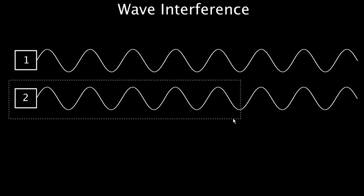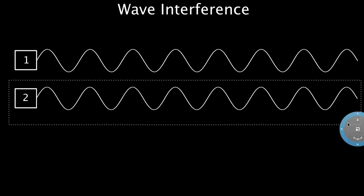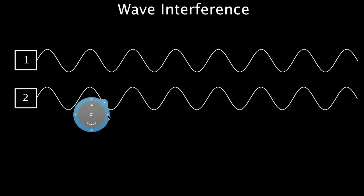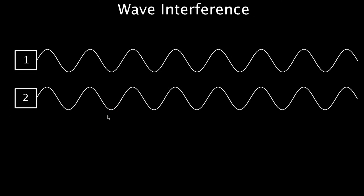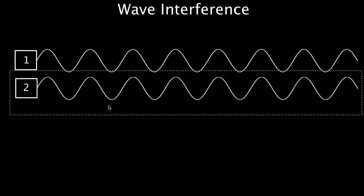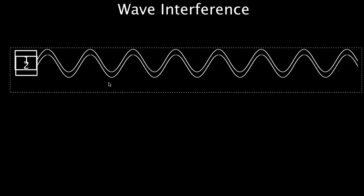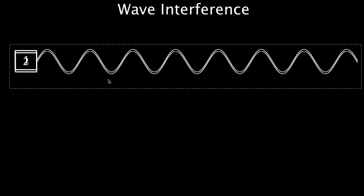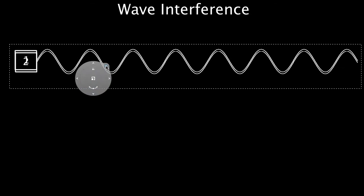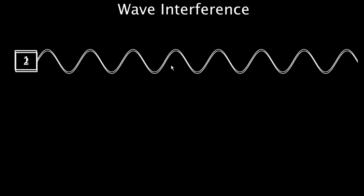What that would look like would be something like this. Let's say these are speakers. I put this speaker right next to the first speaker, side by side. They'd be creating sound waves in this region, and you can think of it as just having one total sound wave.